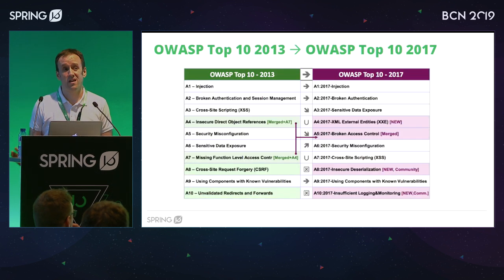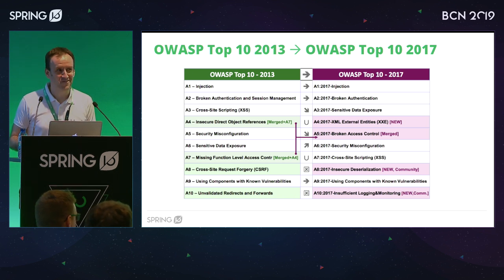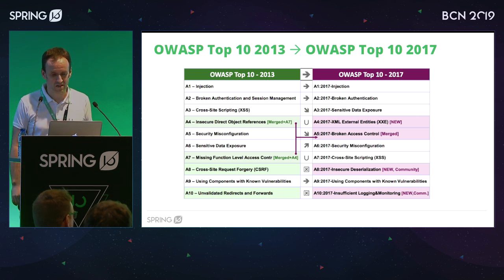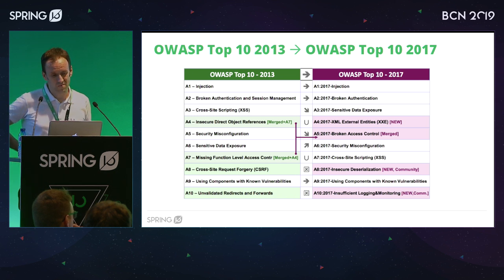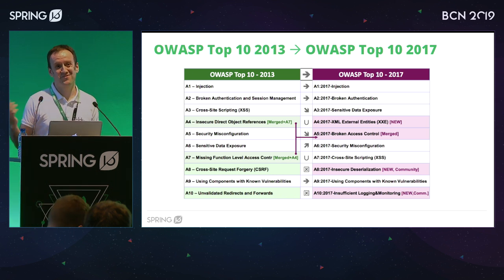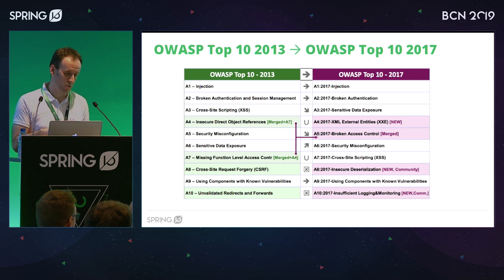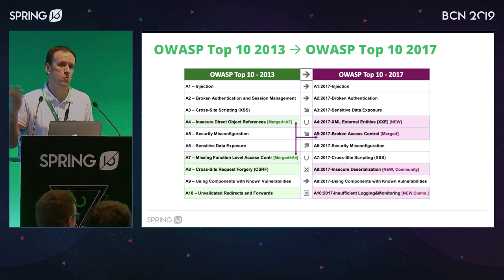Let us start with OWASP Top 10, which probably most of you know. We have a new specification published two years ago. If you see it in detail, it's not so different. It's a bit surprising that in four years we have almost the same issues in the top 10 — we haven't improved too much. They have merged some of them: access control risks like A4 and A7 have been integrated into just one issue, but the problems are exactly the same.